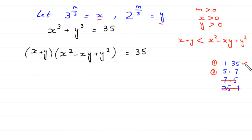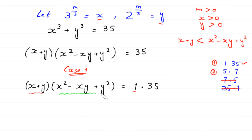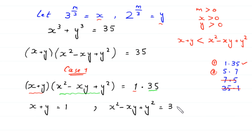In Case 1, we write (x + y)(x² - xy + y²) = 1 × 35. We assign the smaller factor: x + y = 1, and the greater factor: x² - xy + y² = 35.